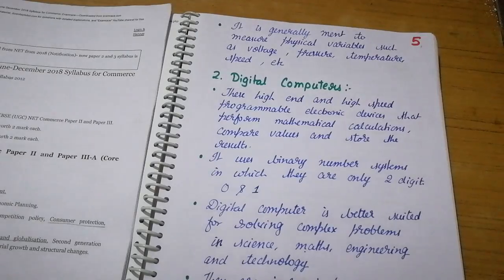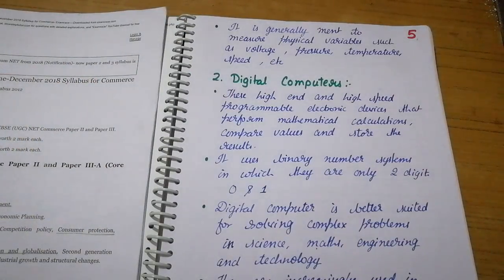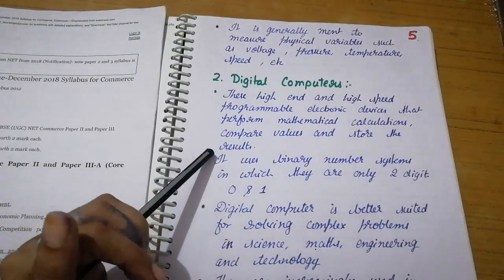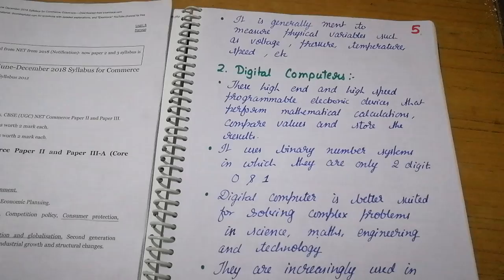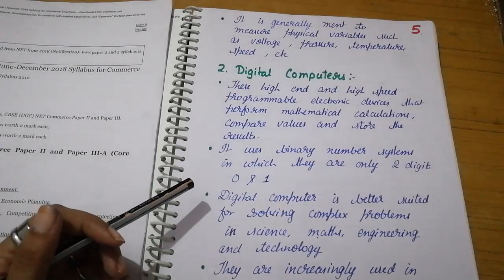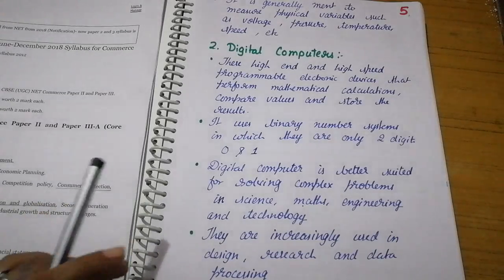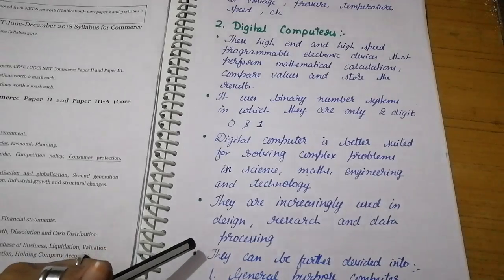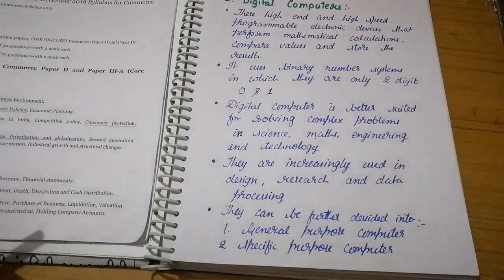Analog computers are generally meant to measure physical variables such as voltage, pressure, temperature, and speed. They are usually used in factories where you need to measure many things together and monitor them. Then we have digital computers. These are high-end, high-speed programmable electronic devices that perform mathematical calculations, compare values, and store results.